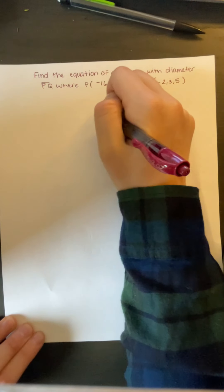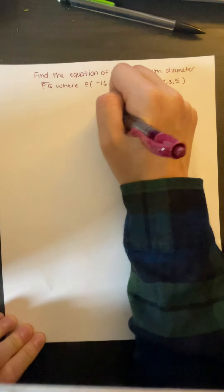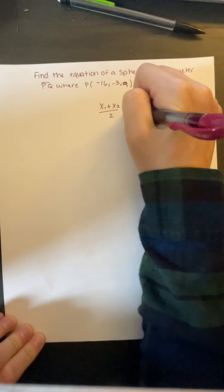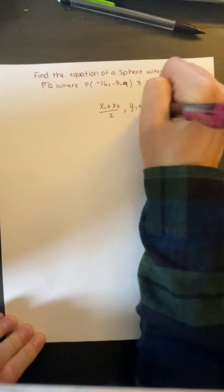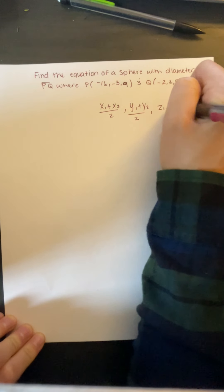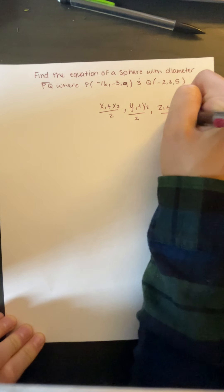First, we want to get the midpoint. In order to get the midpoint, this is the equation for it: x1 plus x2 divided by 2, y1 plus y2 divided by 2, and z1 plus z2 divided by 2.